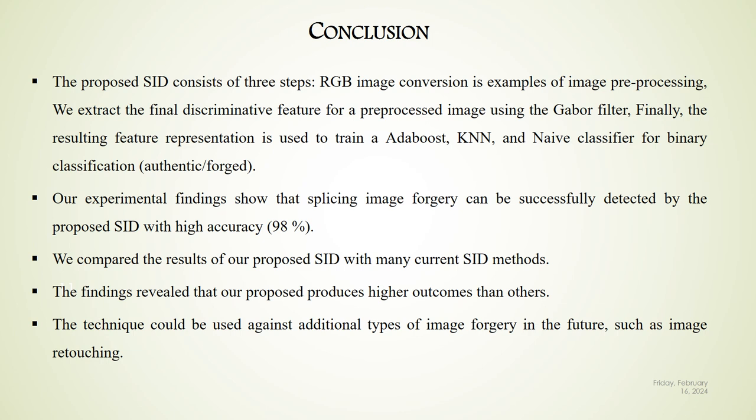In conclusion, the proposed method contains three steps: image transformation, feature extraction, and classification. Our experimental findings confirm that splicing image forgery can be successfully detected by the proposed method with around 98% accuracy. We compared our method with many current state-of-the-art methods, and the results show that our proposed approach yields higher outcomes than others. This technique could also be used against additional types of image forgery in the future, such as image retouching.